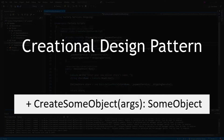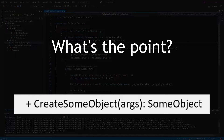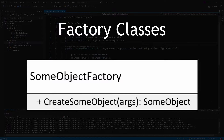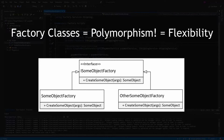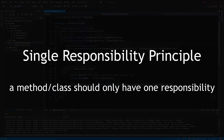But why would you want to do this? What's wrong with constructors? Well, this Factory Method that creates an object can be wrapped in a class, and if you wrap it in a class, then you can leverage the benefits of polymorphism and pretty much swap out which type of object gets instantiated with only one line of code. It also helps us achieve the S in SOLID principles — the single responsibility principle.